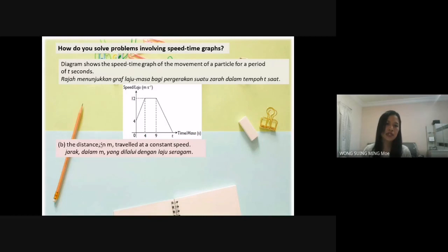Part B: the distance in meters traveled at a constant speed. Where is the constant speed? Constant speed is here. We call it uniform speed also.